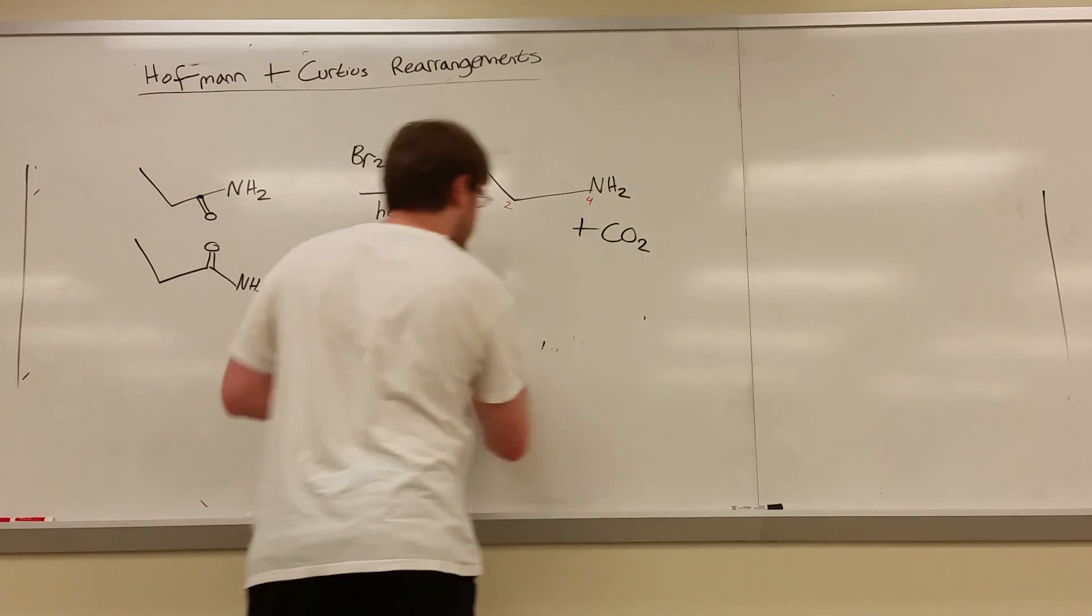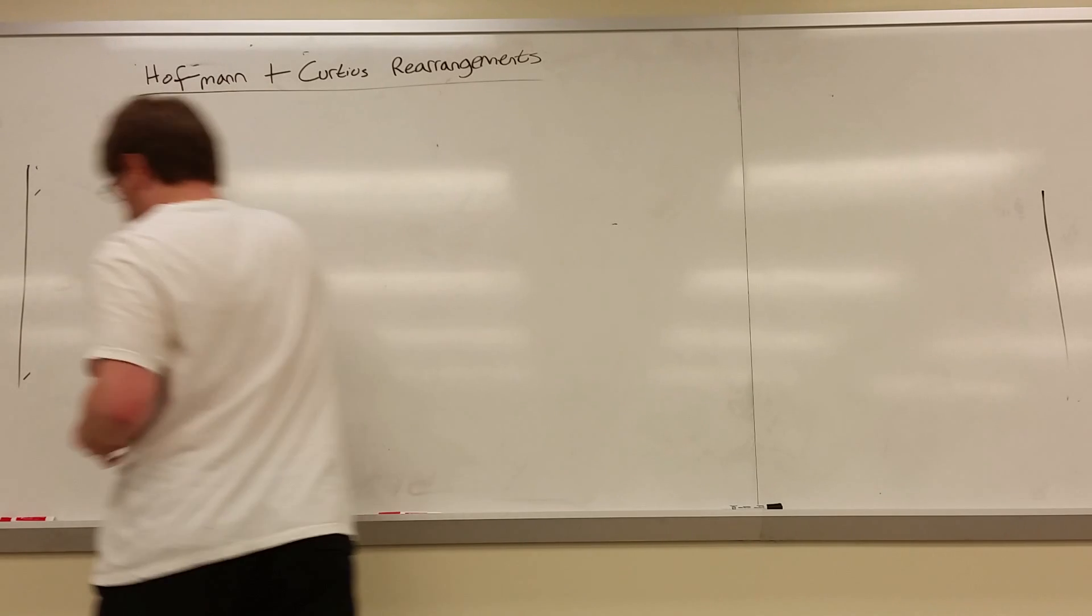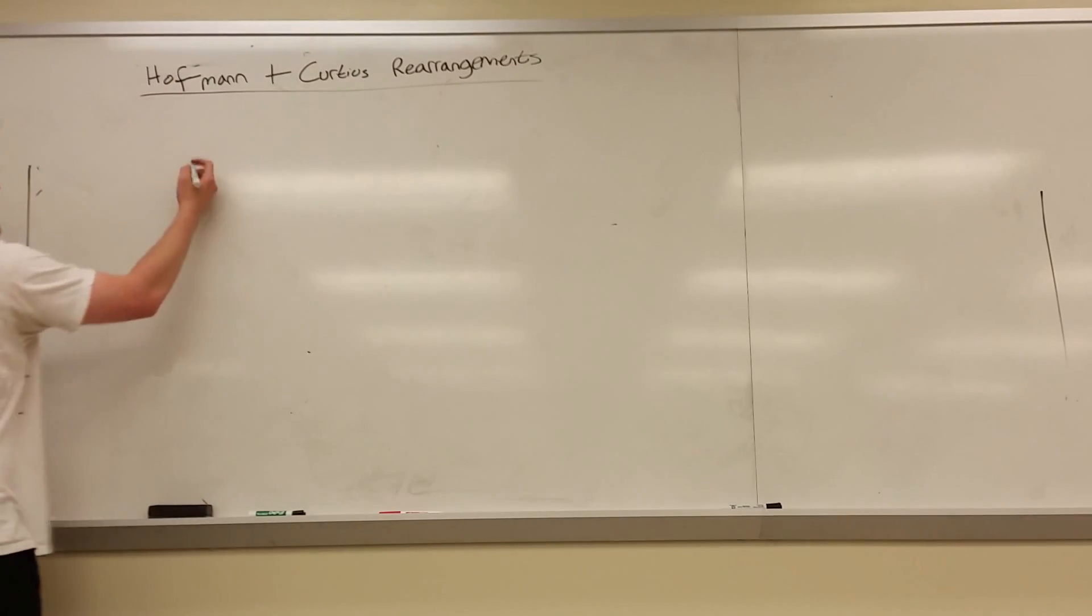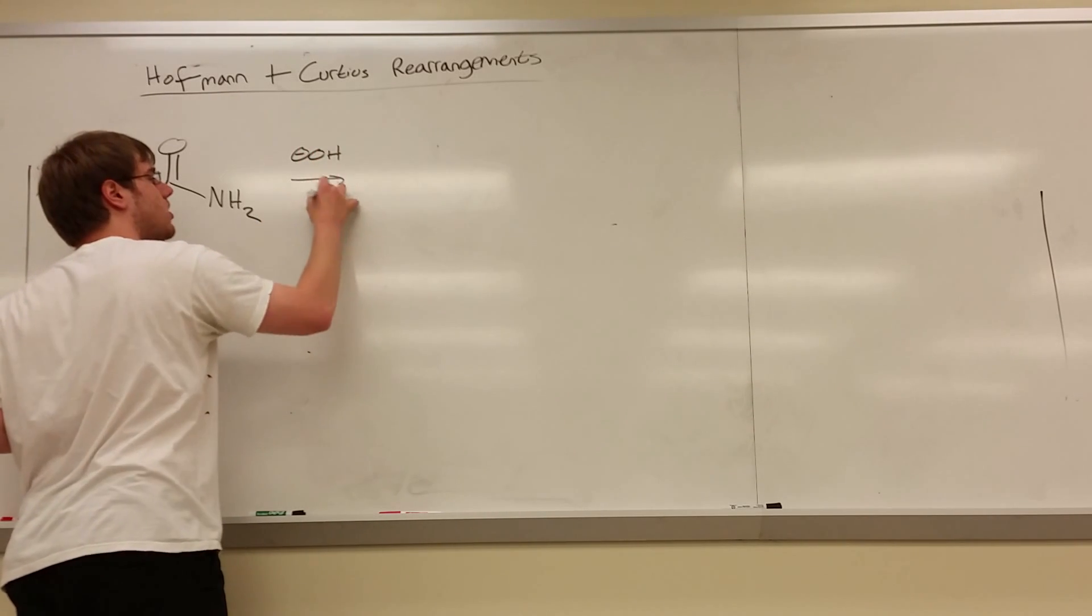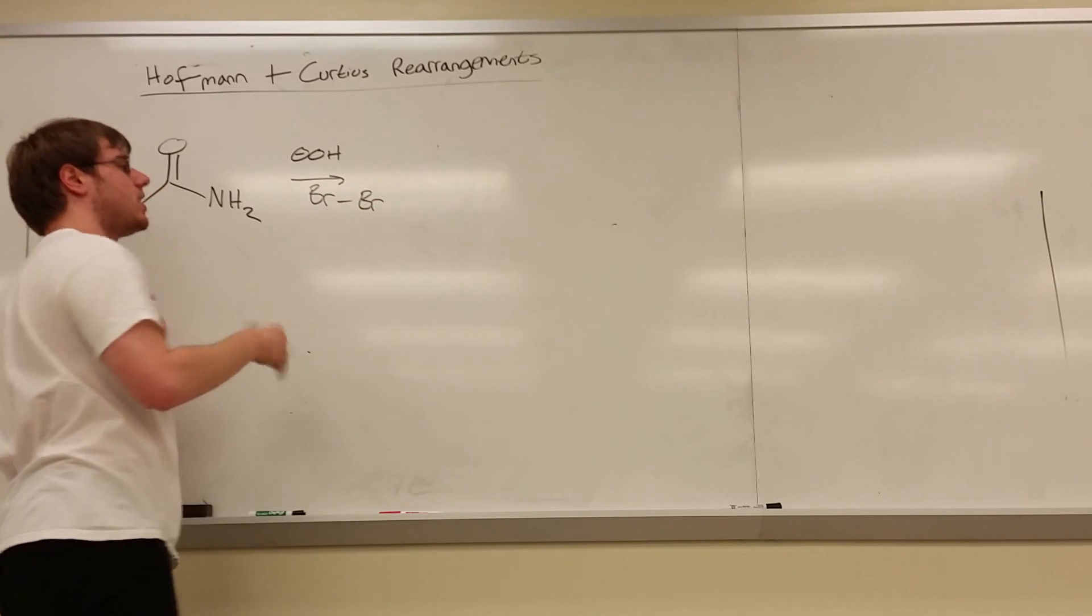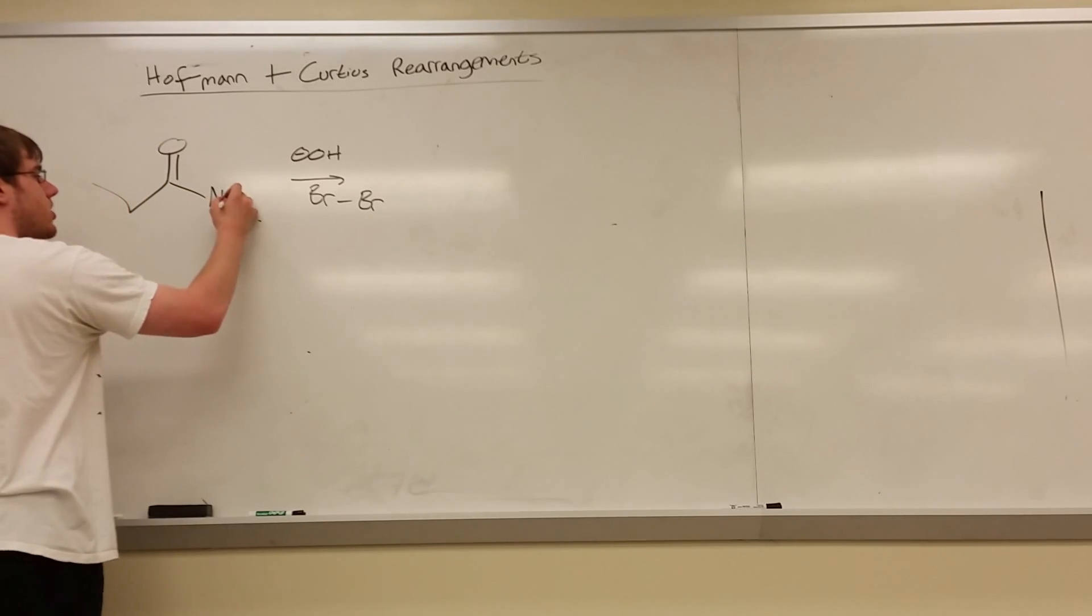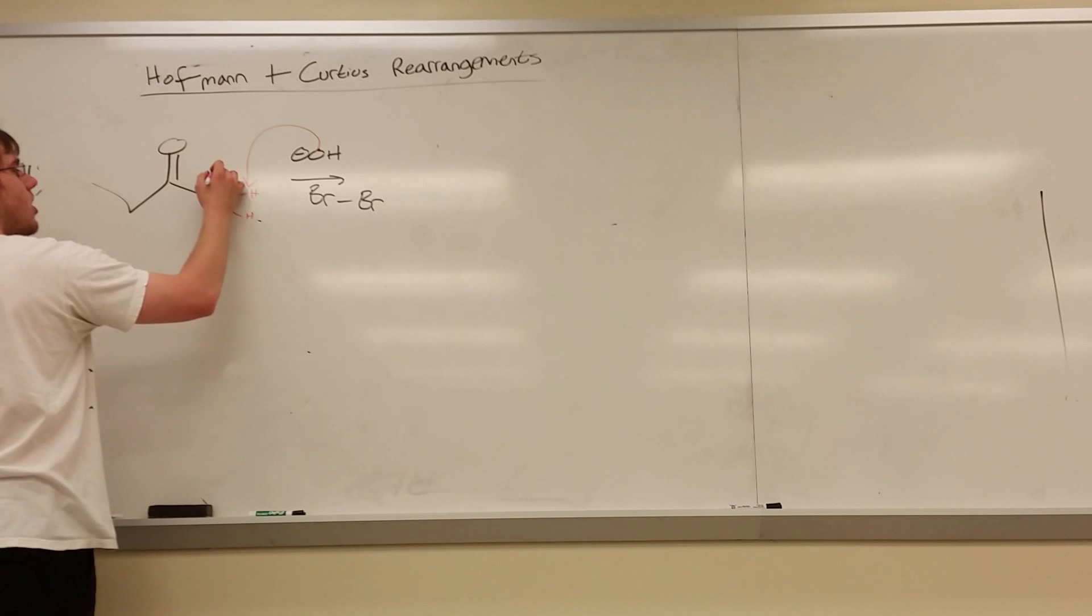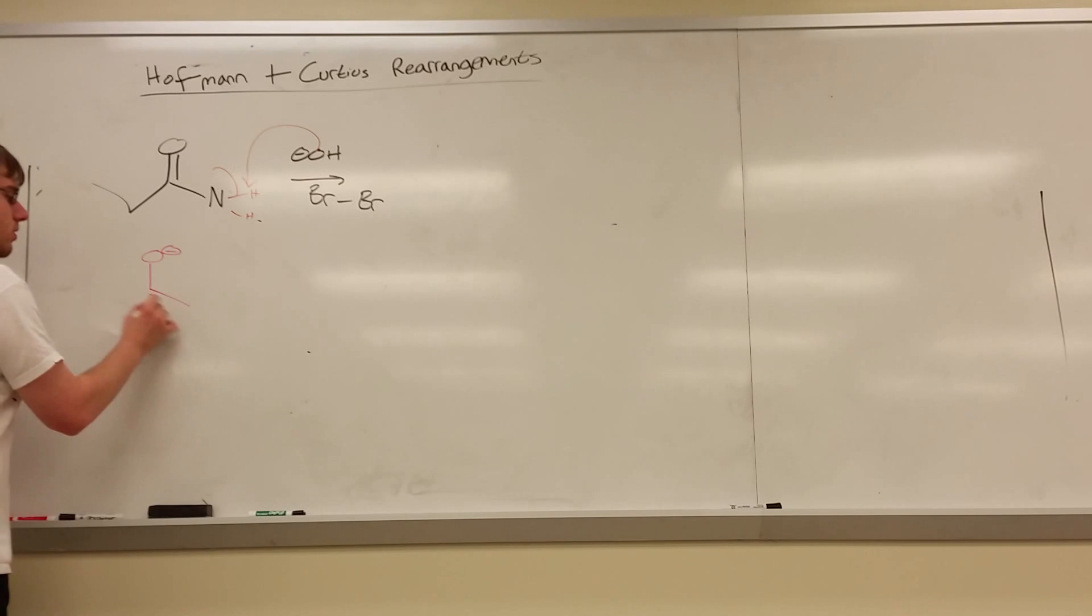Alright, so what's the mechanism of these? Why am I saying this mechanism is nightmarish? Let's look at what happens. We're going to start with the Hoffman rearrangement mechanism. So we said we have a primary amide and some number of carbons reacting with OH minus and Br2, no particular order. They're mixed together. Well, OH minus is a base, and like a base, it's going to pull off a proton.